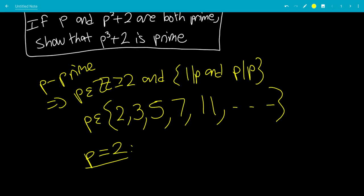So p equals 2. We get p squared plus 2 equals, so that would be 6, which is not prime. It's not on the list.